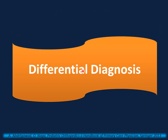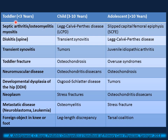The differential diagnosis of limping in children varies by age. In toddlers less than 3 years, possibilities include septic arthritis, osteomyelitis, myositis, discitis — important to always examine the spine — transient synovitis, toddler fracture, neuromuscular disease, developmental dysplasia of the hip, neoplasm, metastatic disease such as neuroblastoma or leukemia, and foreign object in the knee or foot.